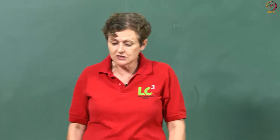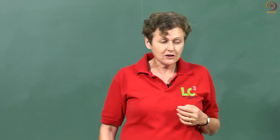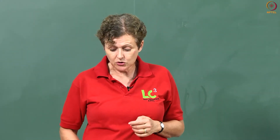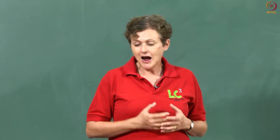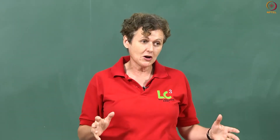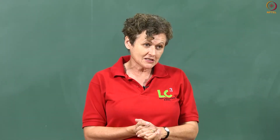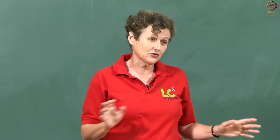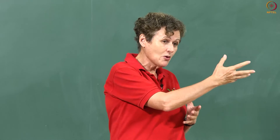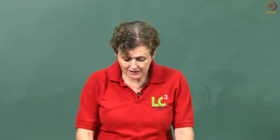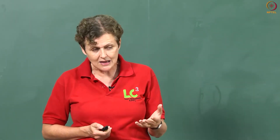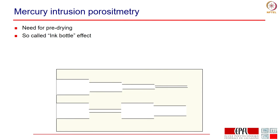Mercury intrusion porosimetry has been very heavily criticized and many people say they do not use it anymore. But I hope to convince you that it can give reproducible and useful results if samples are prepared correctly — and this is where drying is absolutely critical. Unfortunately, most people in the past dried their sample in an oven at 105°C and then did the experiment, getting nonsense because cracks form. These cracks are like highways the mercury can go down, making interpretation impossible. The second issue is the ink bottle effect, and we can now interpret it correctly thanks to the picture we have from NMR.